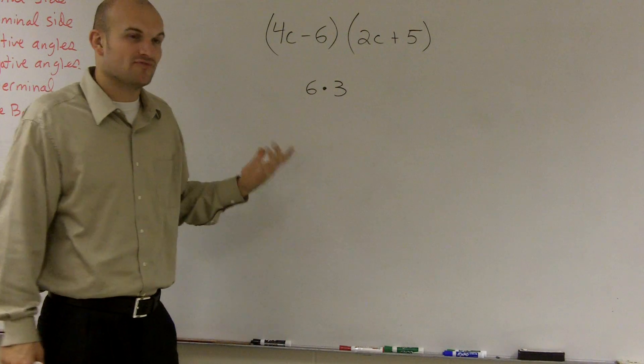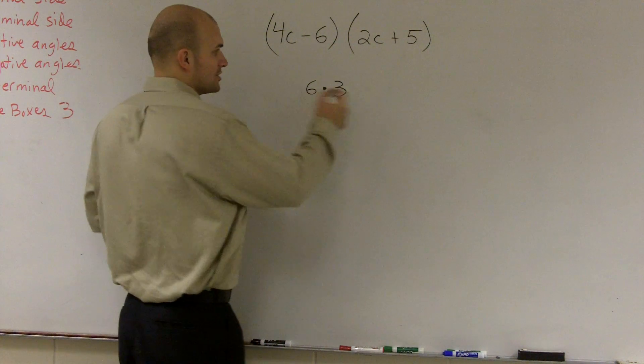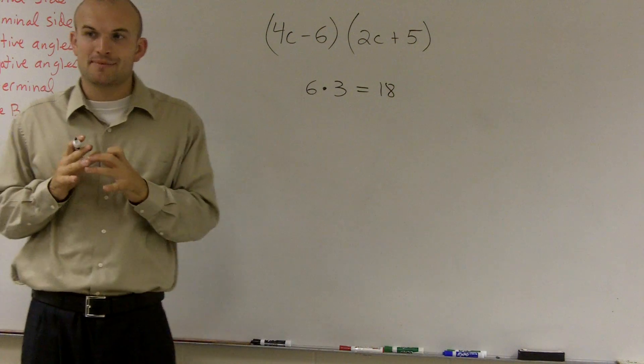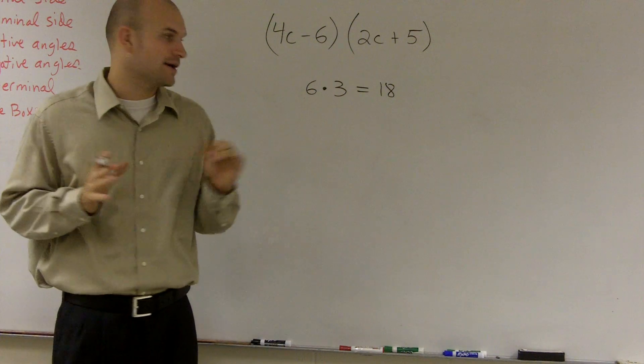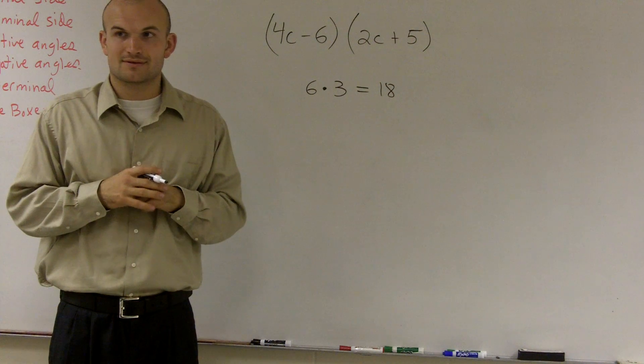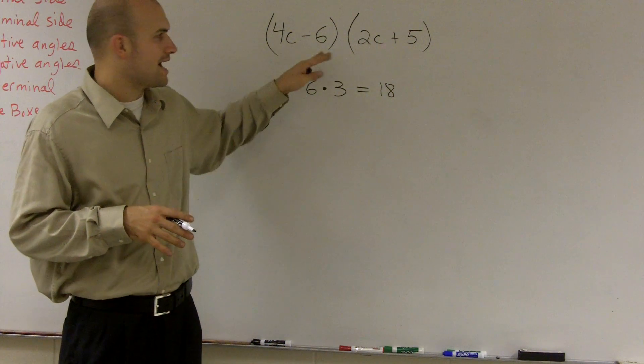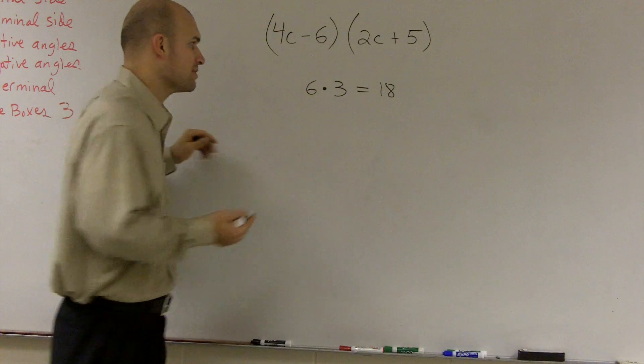So let's look at the example 6 times 3. Everybody in here should know that 6 times 3 is equal to 18. Now, what I'm going to do is manipulate these two binomials. I'm going to manipulate them to show you how to multiply binomials, numbers multiplied by each other.